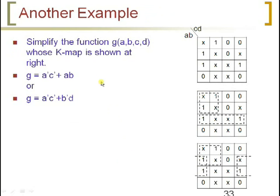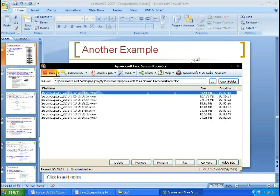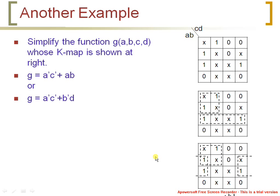Another example: simplify the function g whose K-map is shown. The groupings can be done in two ways, and in both cases we again get only 2 min terms in the realized expression. In the next session we will discuss universal gates and their advantages. Thank you.